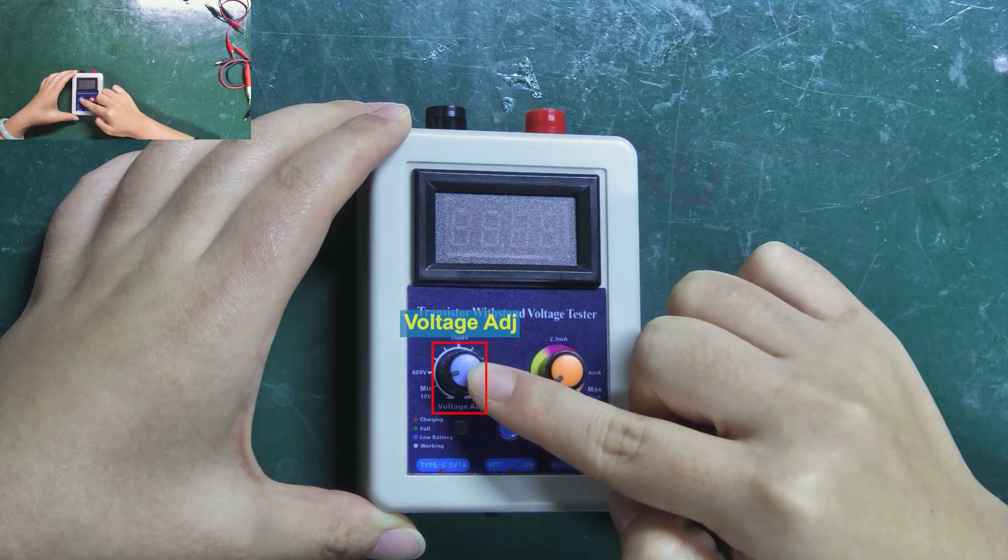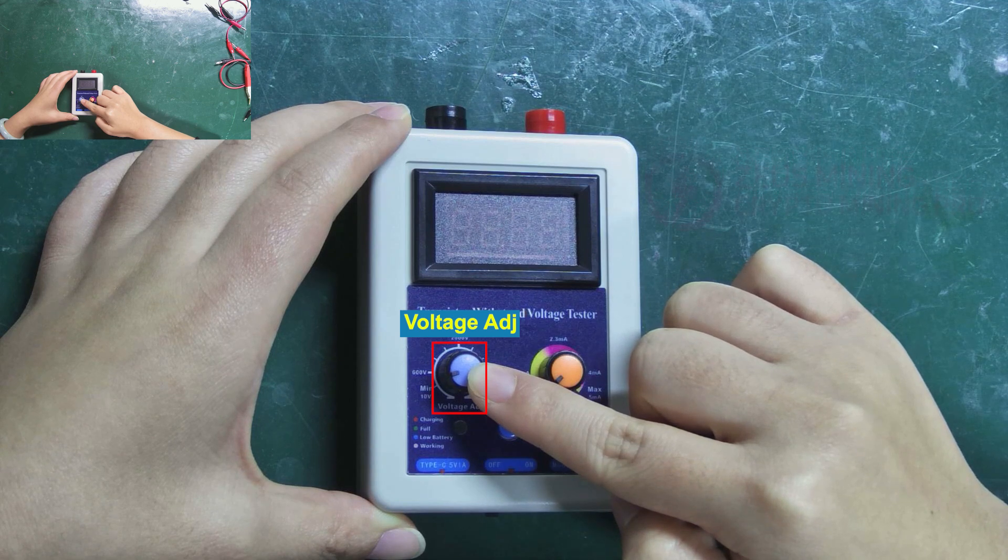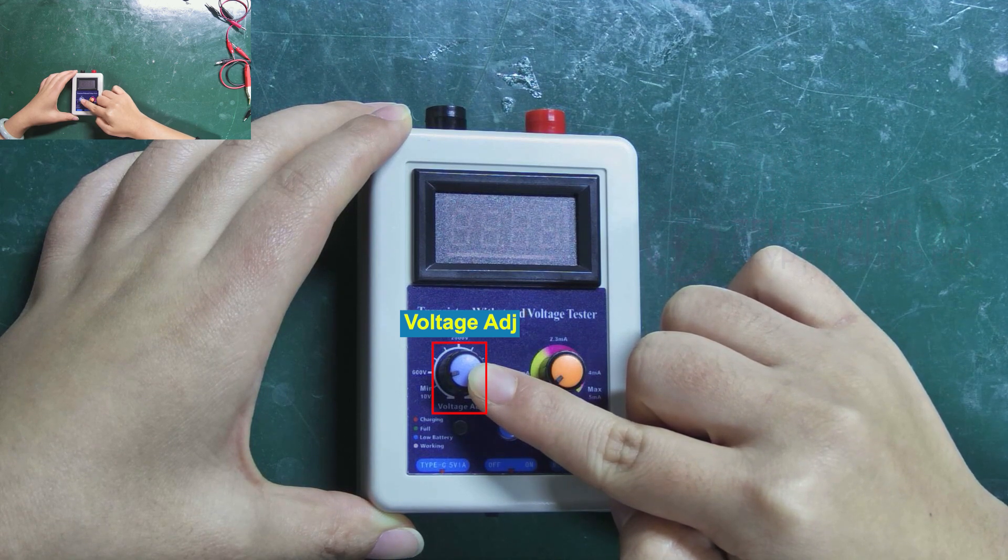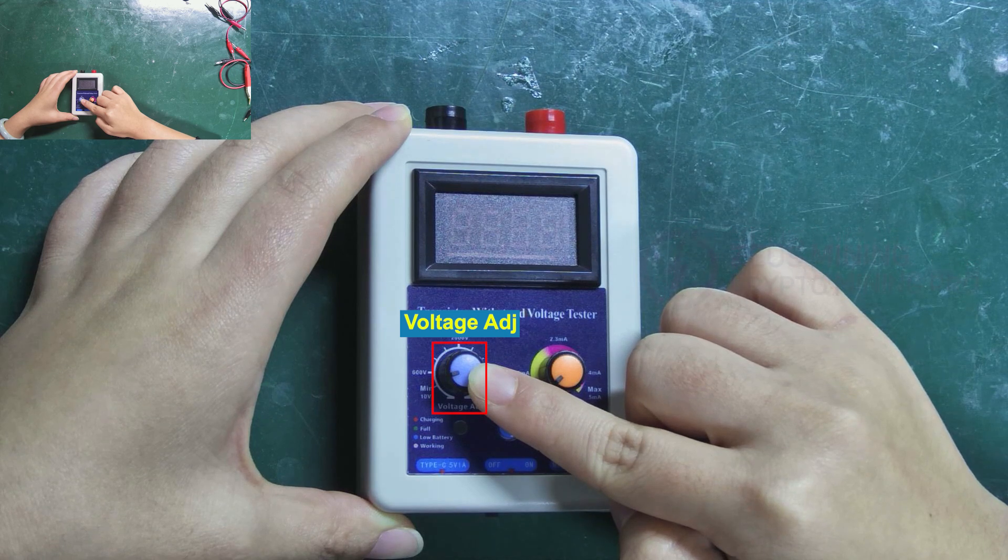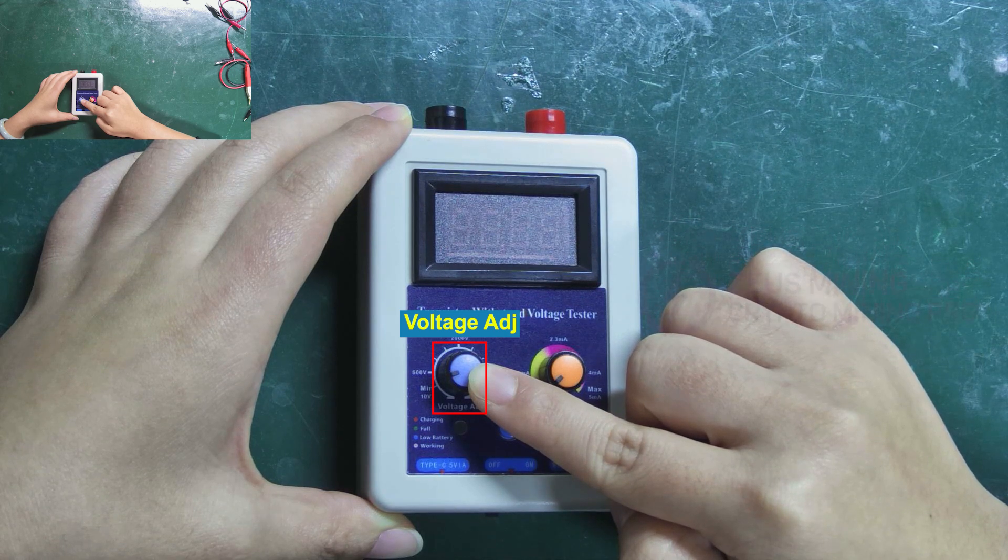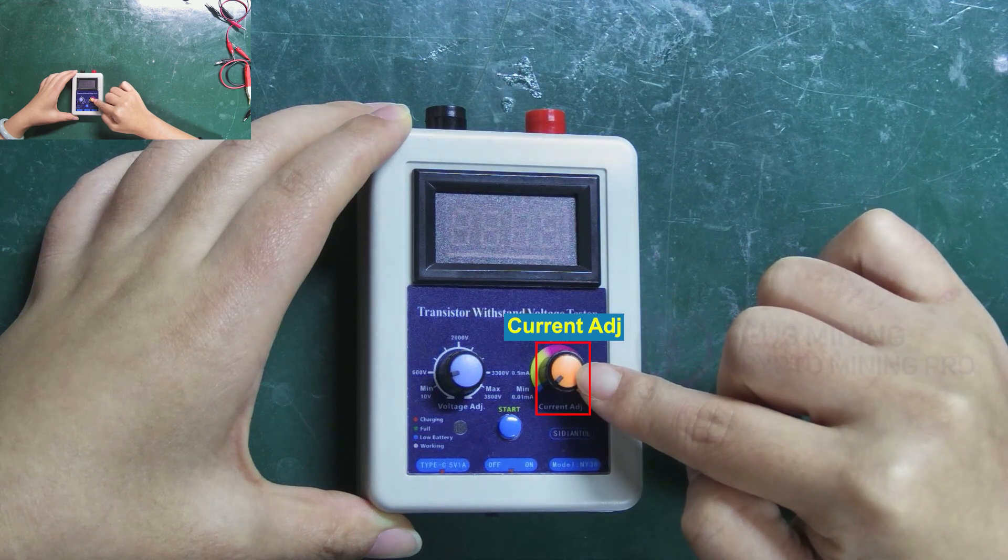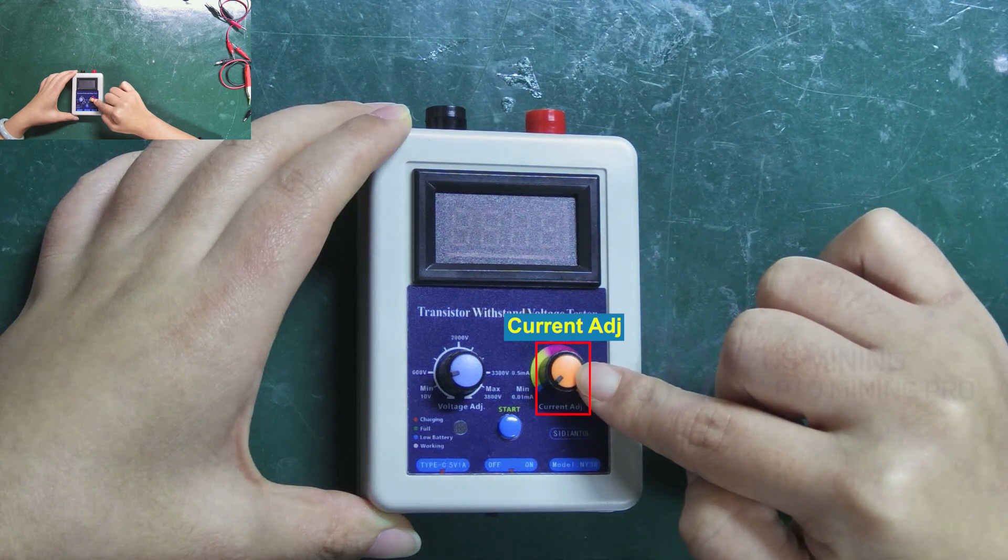The blue button is used to adjust the voltage. When measuring, make sure this value is at least 1.5 times higher than the component's withstand voltage value. The orange button adjusts the current. It can be set to maximum directly during measurement.